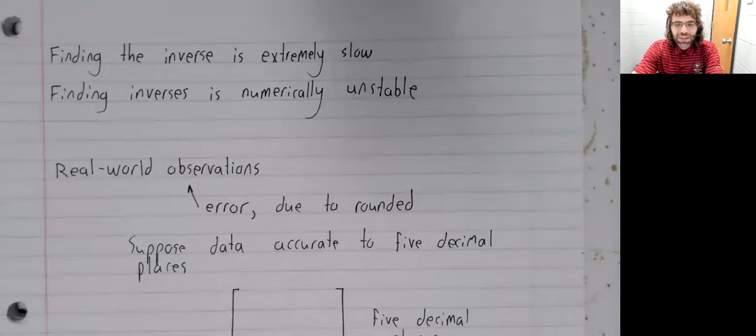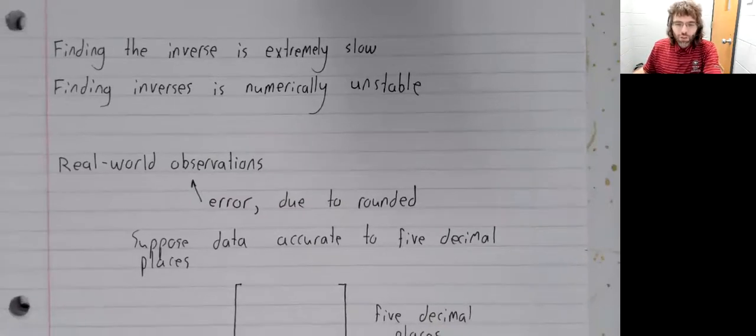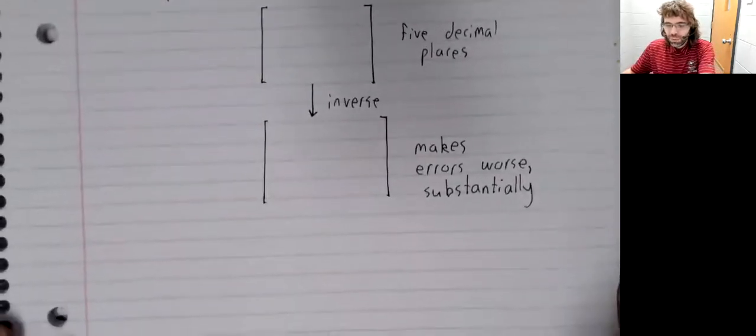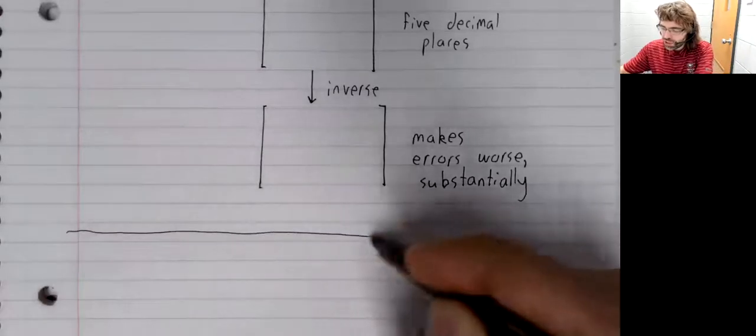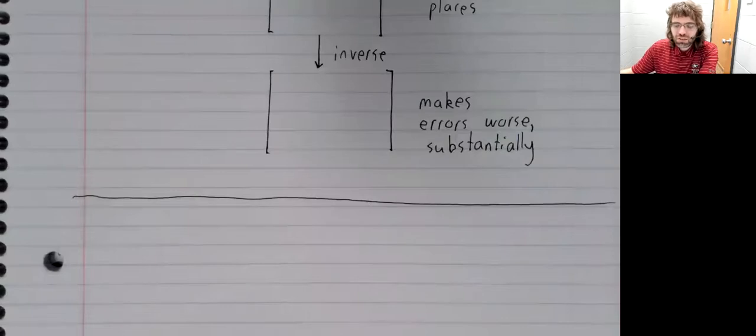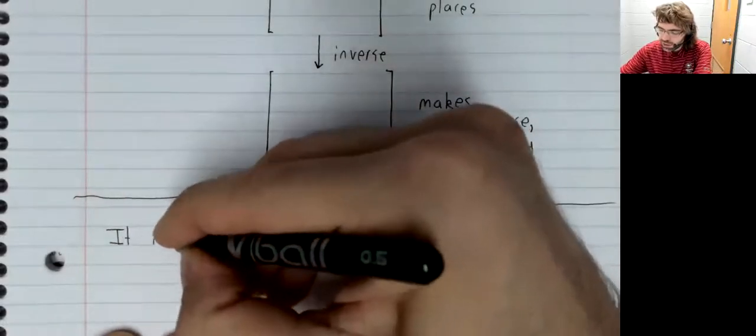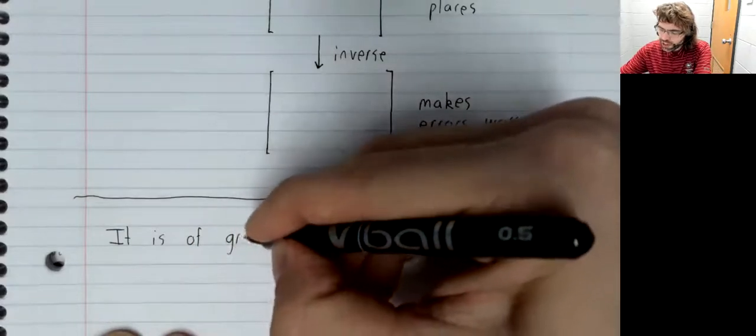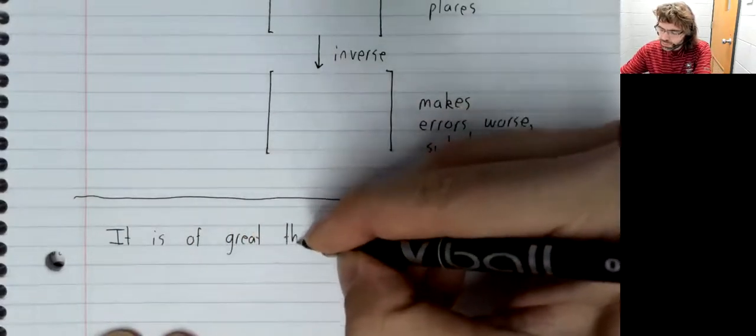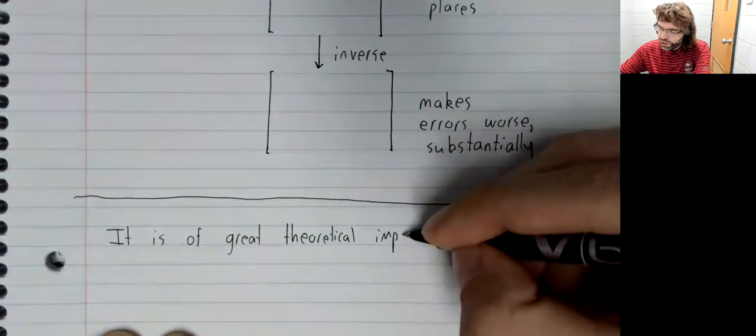And I think that sort of raises a natural question. If we can't find inverses, then what is any of this for? We'll answer that question in the next section. But I'll give a summary answer for now. Now, it is of great theoretical importance